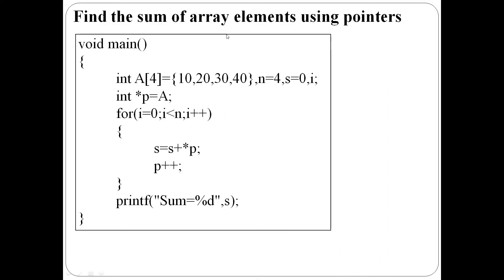Write a C program to find the sum of array elements using pointers. Here the array is a, with 4 elements. n equal to 4 is the size of the array. int star p equal to a — pointer p points to the beginning of array a. Using a for loop, all array elements are added one by one into sum variable s, initially equal to 0. The for loop iterates n times. Inside: s is equal to s plus star p. Pointer is incremented each iteration. Finally, print the sum.